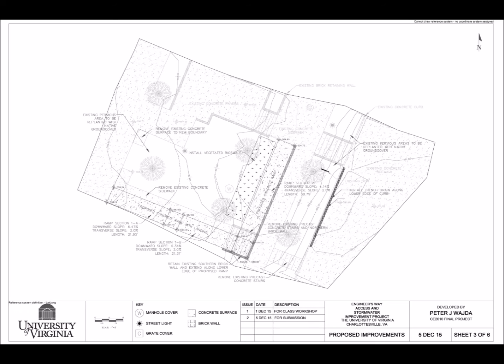Finally, I wanted to reduce the peak flow to the bottom of the slope by at least 50%. I was able to accomplish that first by planting ground cover over the existing mulch areas, which reduced the peak flow by about 17%, and the remaining amount was covered by the installation of a vegetated bioswale right on the upper side of the new path.